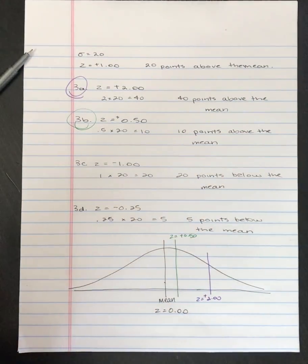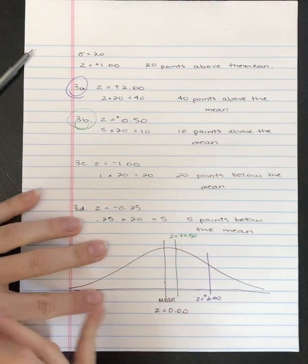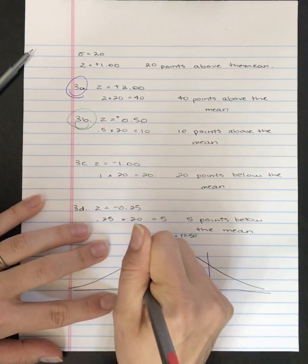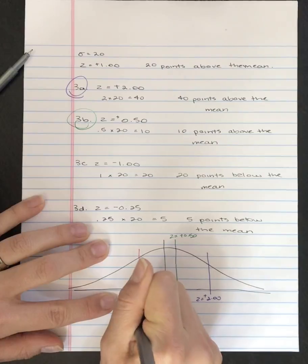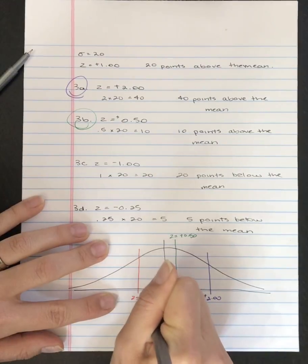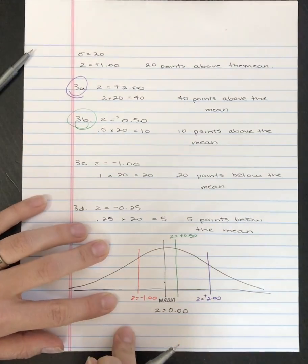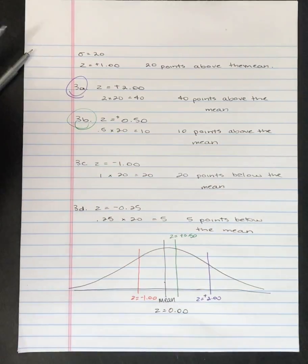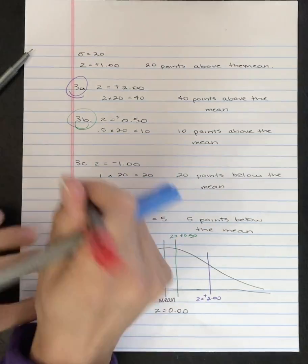The z-score of minus 1 is going to be to the left of the mean. It's over here. Let me code that. So that one's in red.